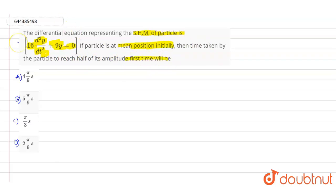So the given data is simple harmonic motion of a particle is given as equation 16 d²y/dt² + 9y = 0. So this is the equation that he has given in the question.